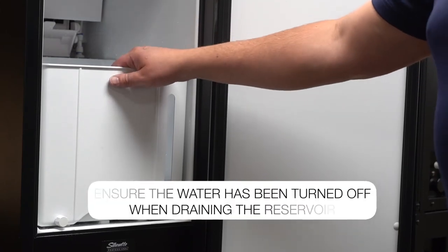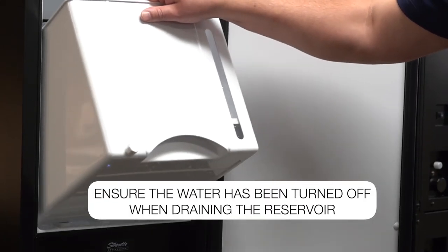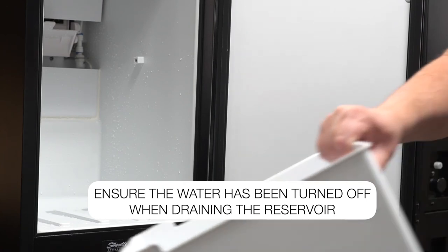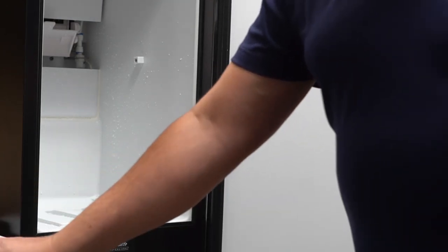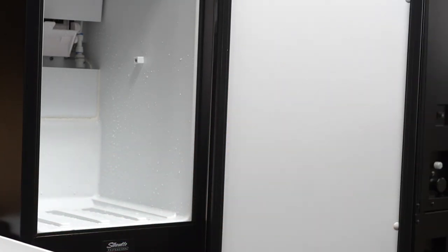Step one of the cleaning process is to remove the ice maker bucket and dispose of any ice that you already have made. You can either freeze it for future use or dump it into the sink.